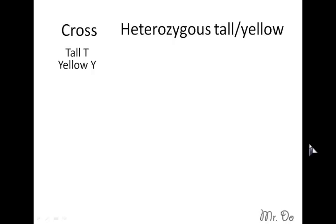Let's take for example, we have tall is T and yellow is Y, so small t would be short and small y would be, let's say, green. So let's do a cross with a heterozygous tall/yellow with another heterozygous tall/yellow.